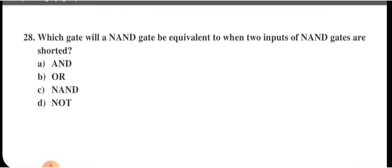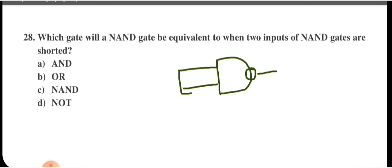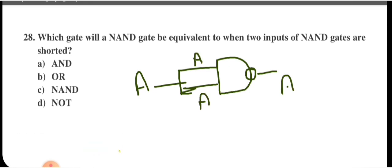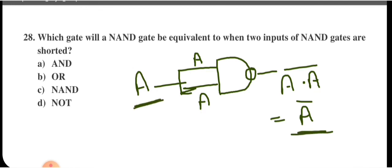Which gate is a NAND gate equivalent to when both inputs are shorted? With both inputs tied to A, the output is (A·A)̄ = Ā. Input is A, output is Ā — this is an inverter (NOT gate). Option D is correct.